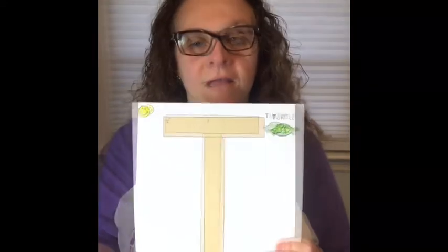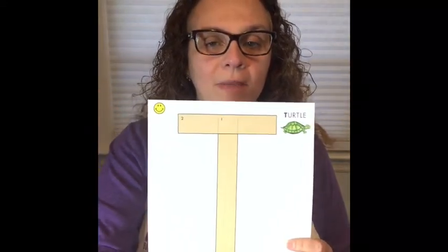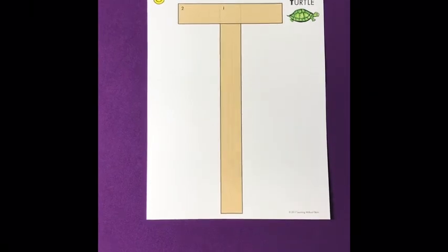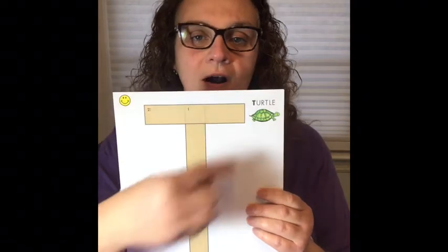For T, you have big line and little line. How many little lines? How many big lines do you need? Yes, we need one big line and one little line.